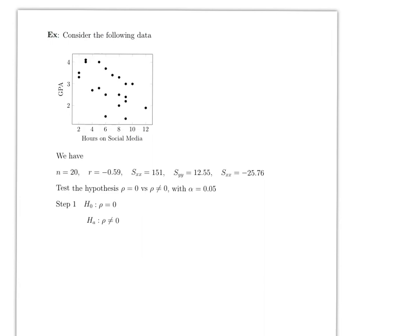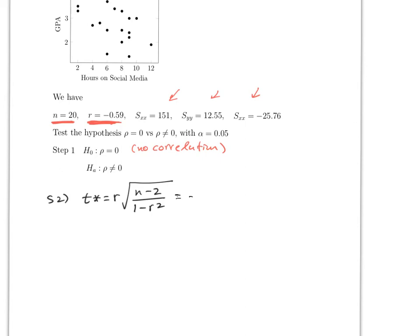One last example: n = 20 and r = −0.59 are given directly — you don't need to find r from raw data. Step one: H₀: ρ = 0 (no correlation), alternative ρ ≠ 0. Step two: t* = −0.59 × sqrt(18) / sqrt(1 − 0.59²) ≈ −3.1. Note 18 = 20 − 2.